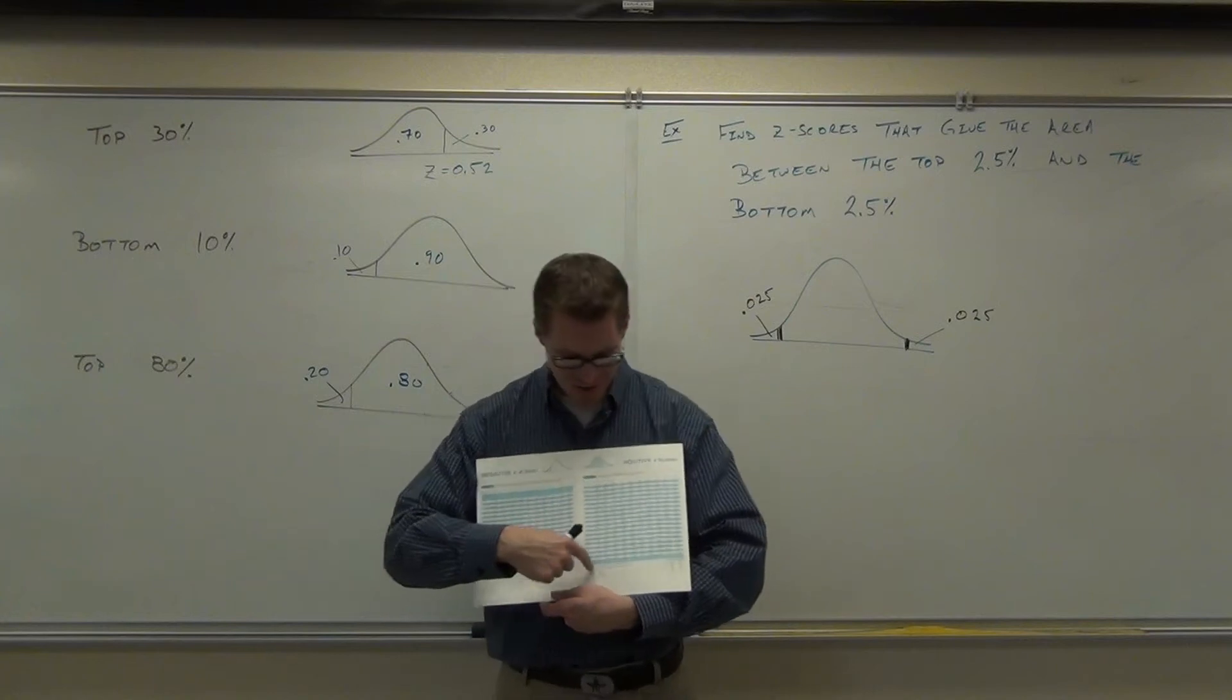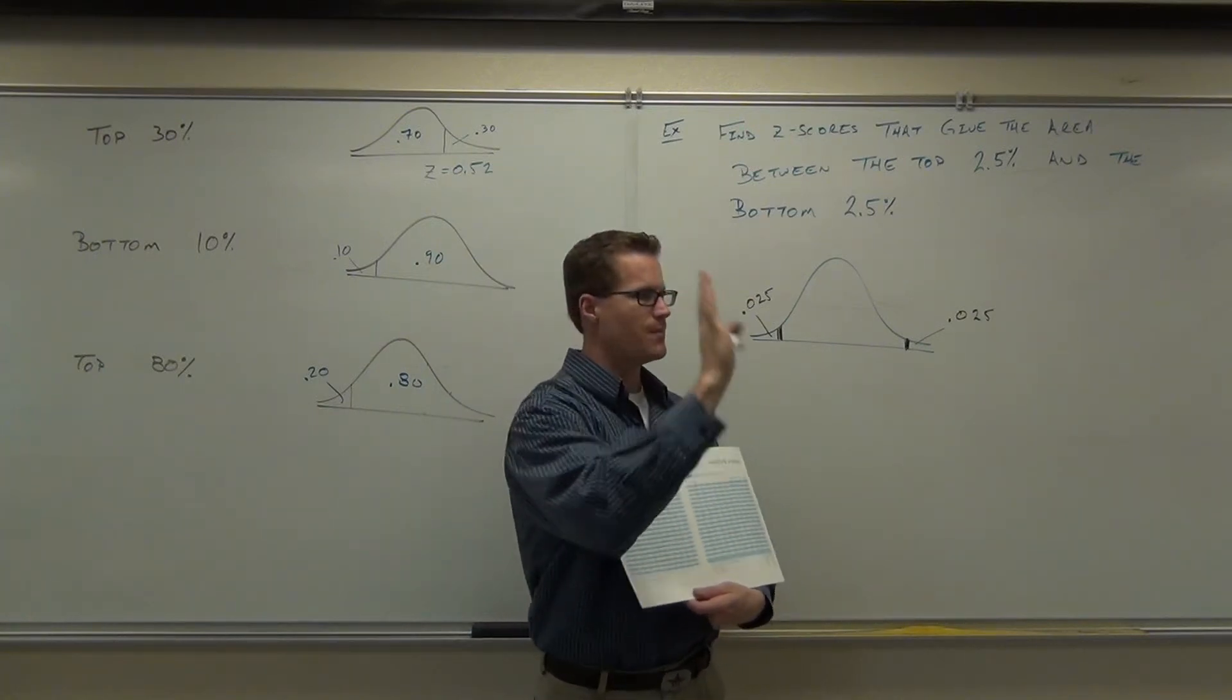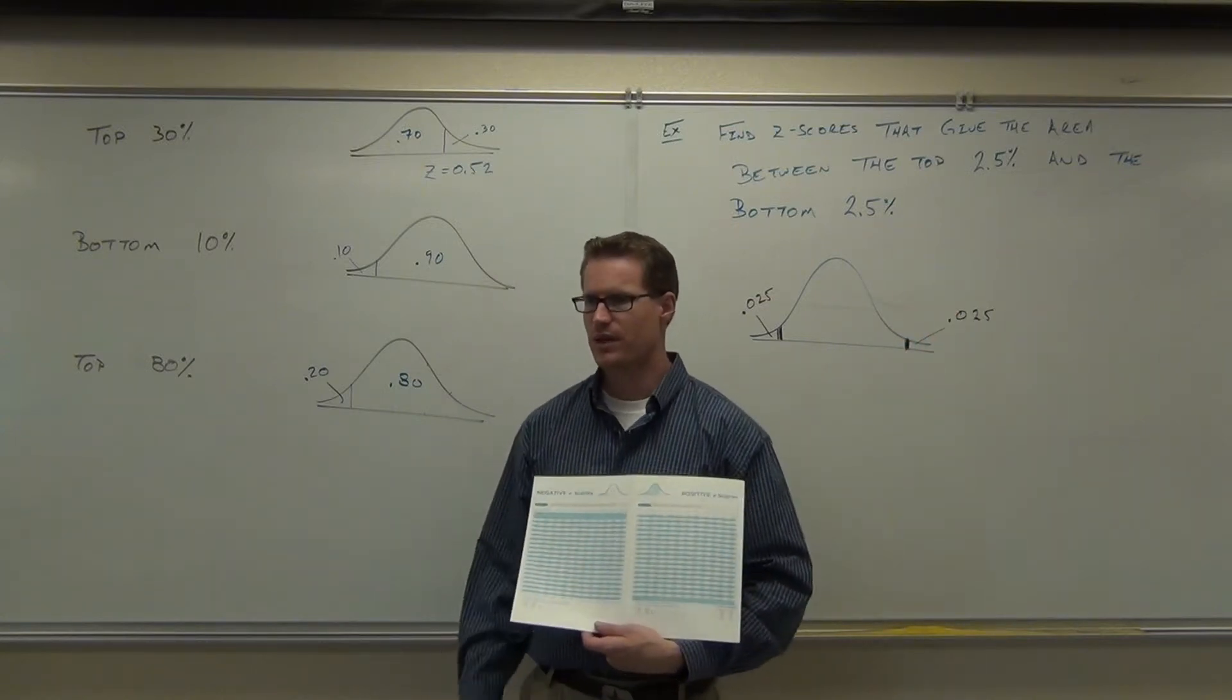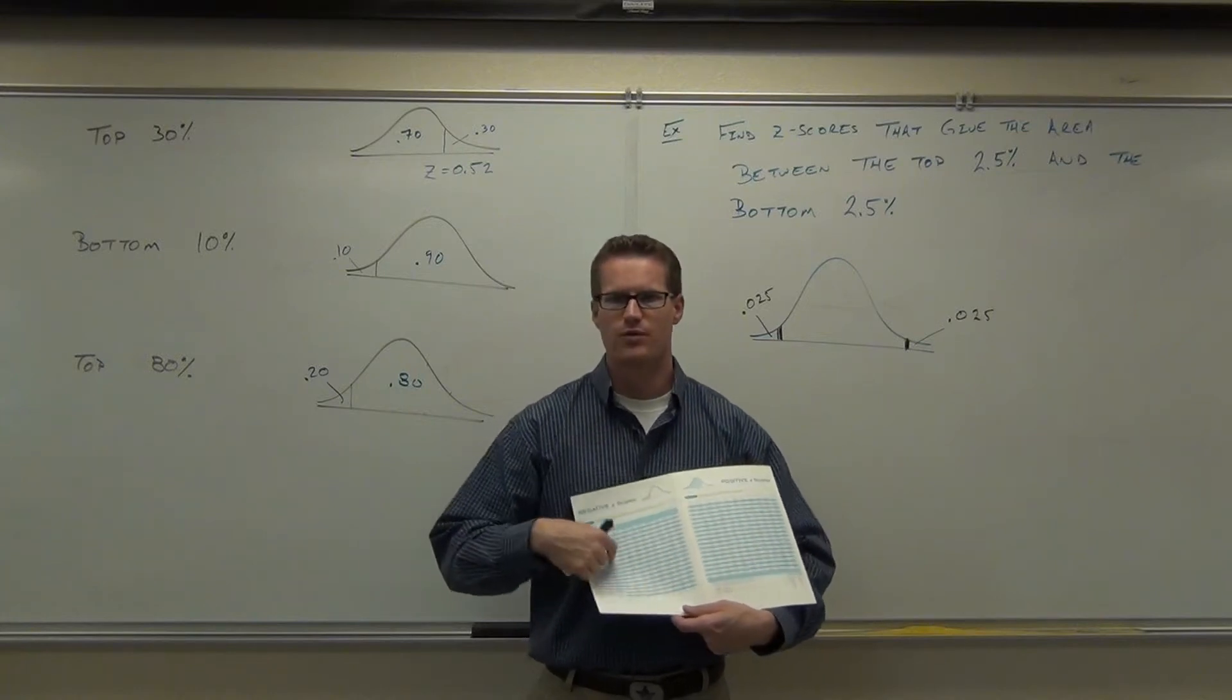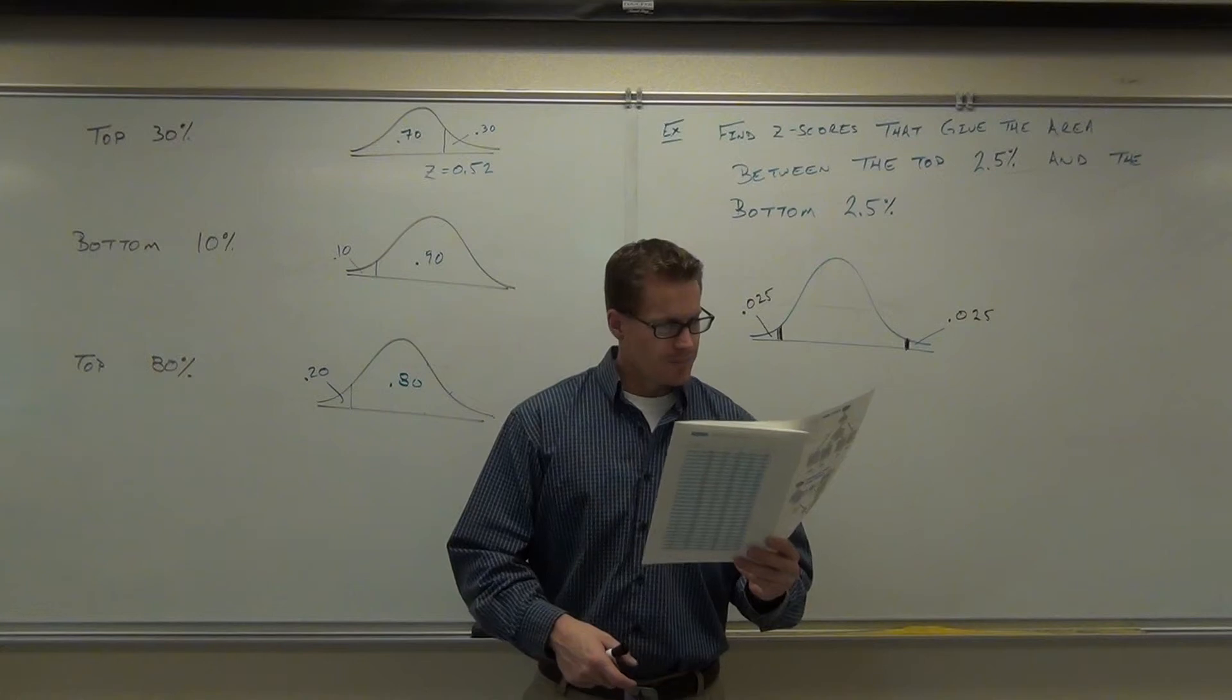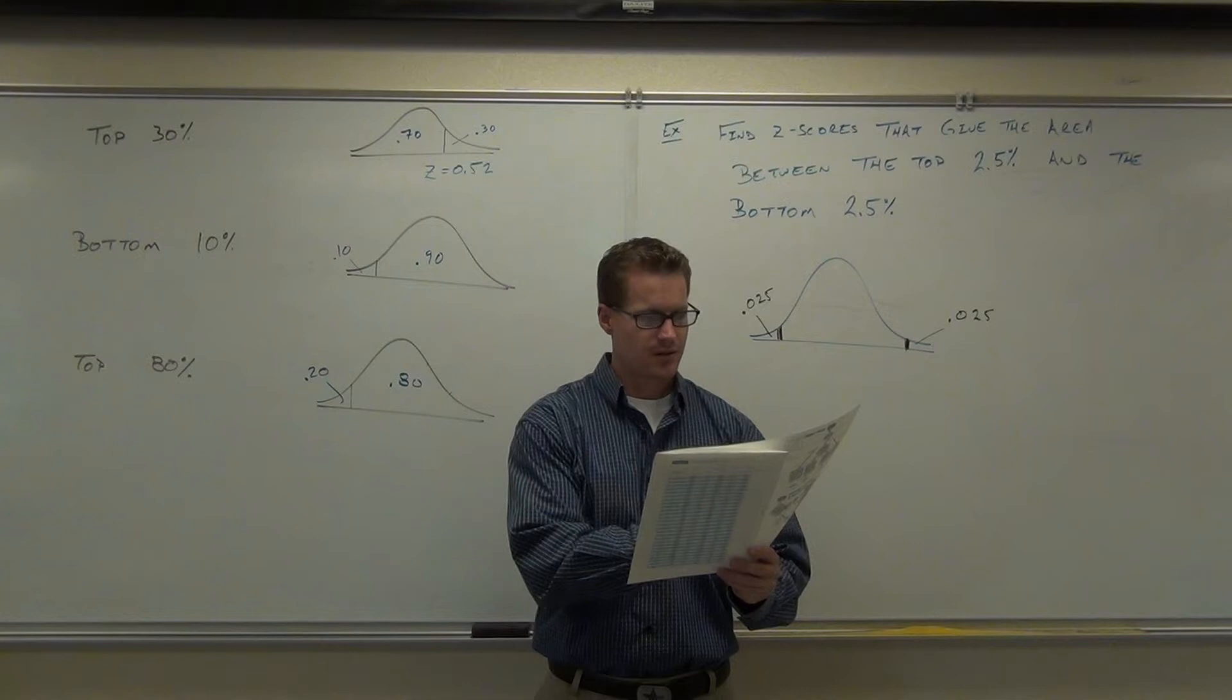If you notice this, the positive z-scores start at 0.50. Why is that? Everything to that side wouldn't have an area greater than 0.50. That's a positive z-score. So these are all your negative z-scores. They have areas less than 0.50. So we have 0.025. Hey, that one's exactly there. Did you find it? Yeah.